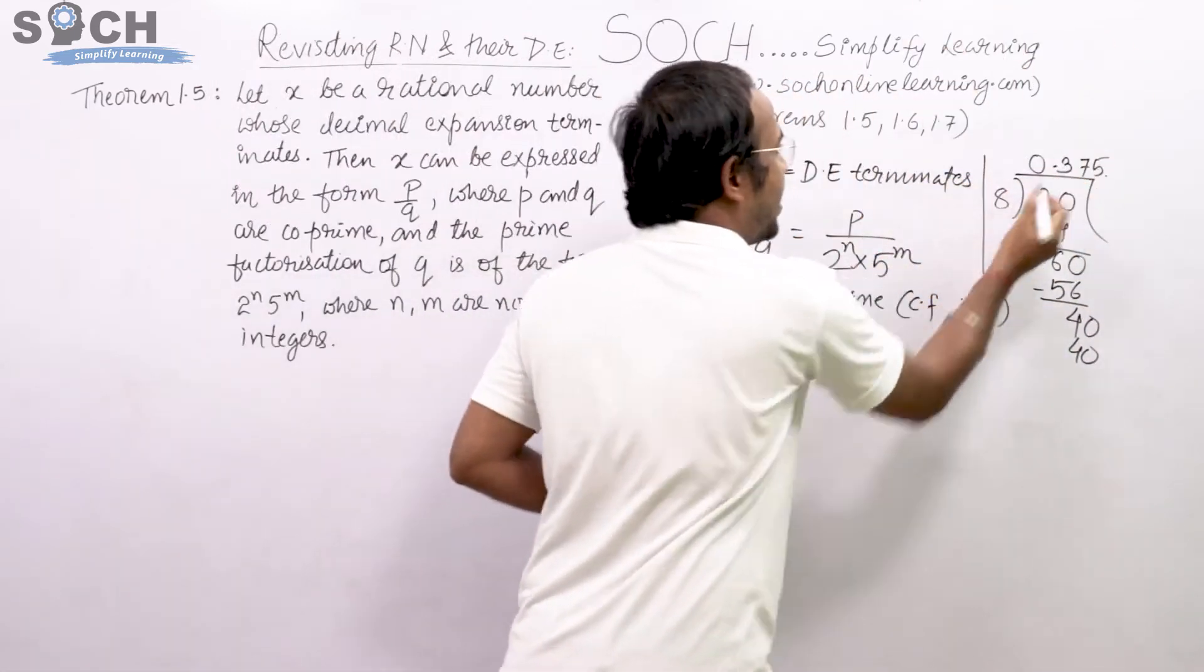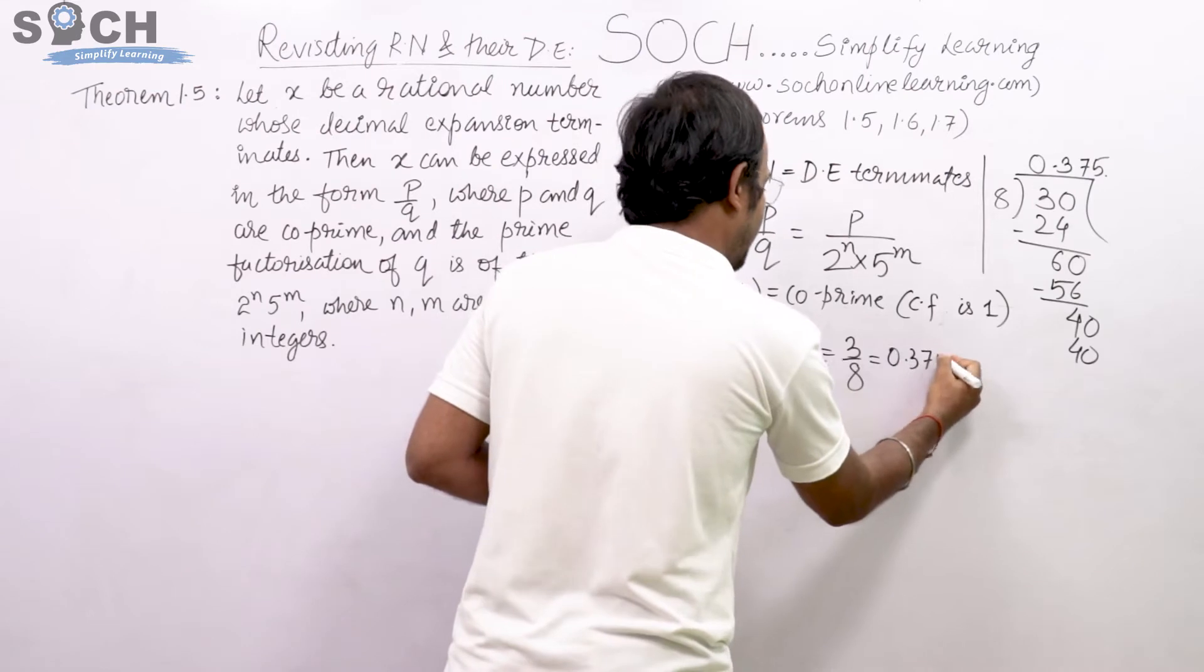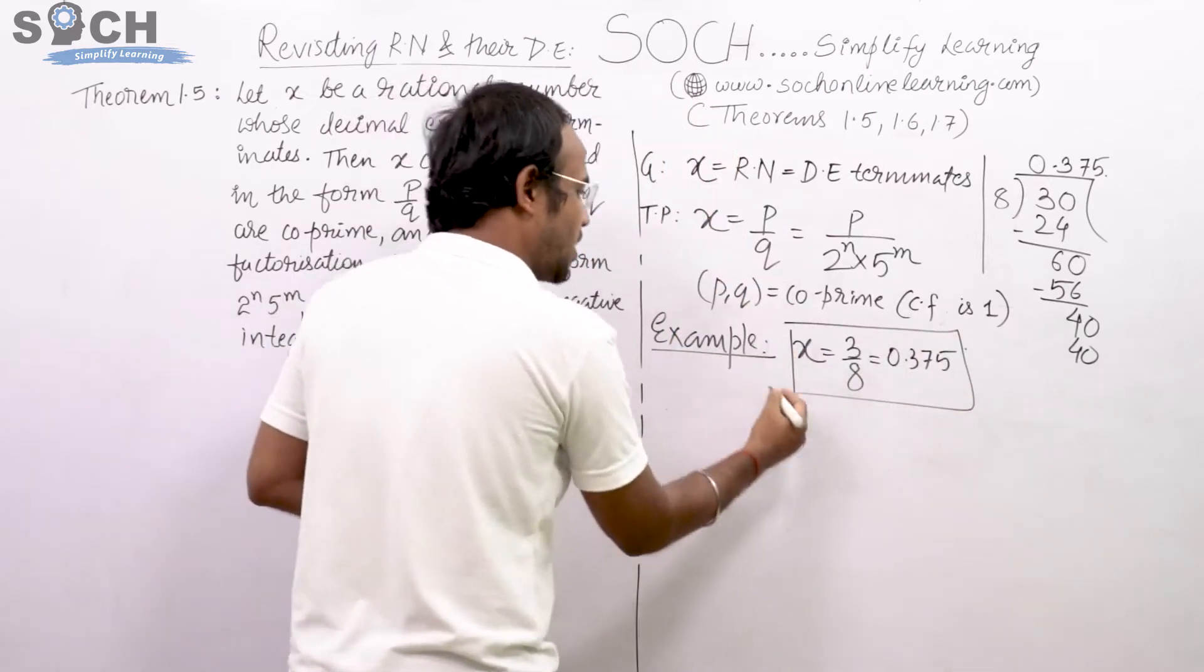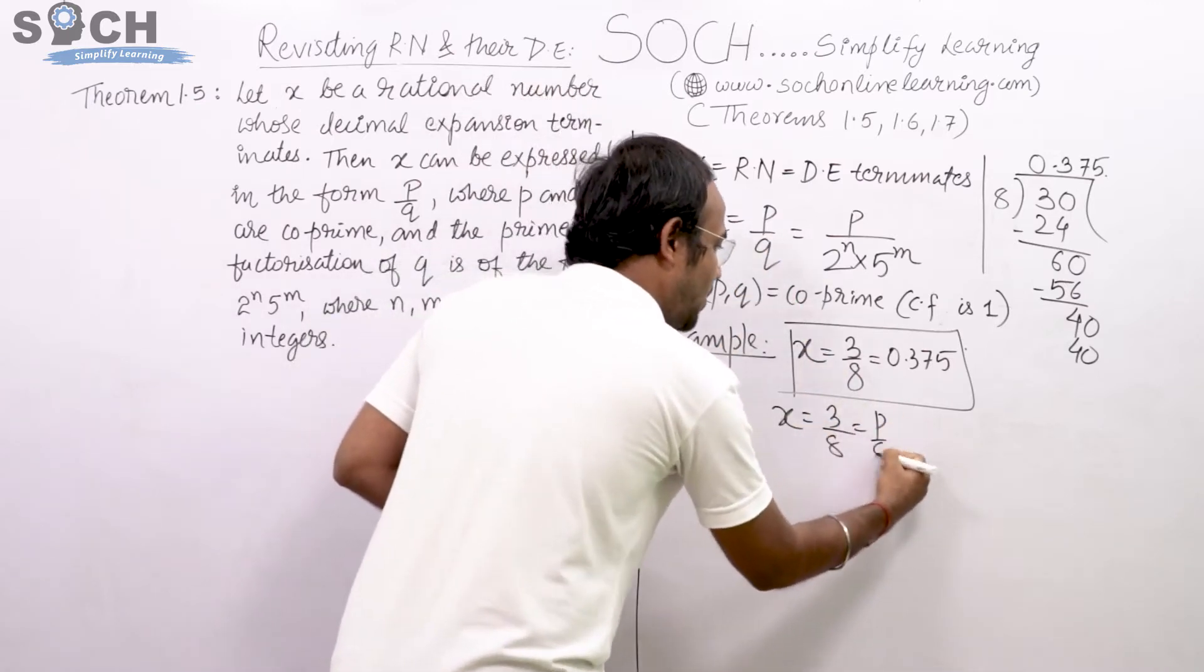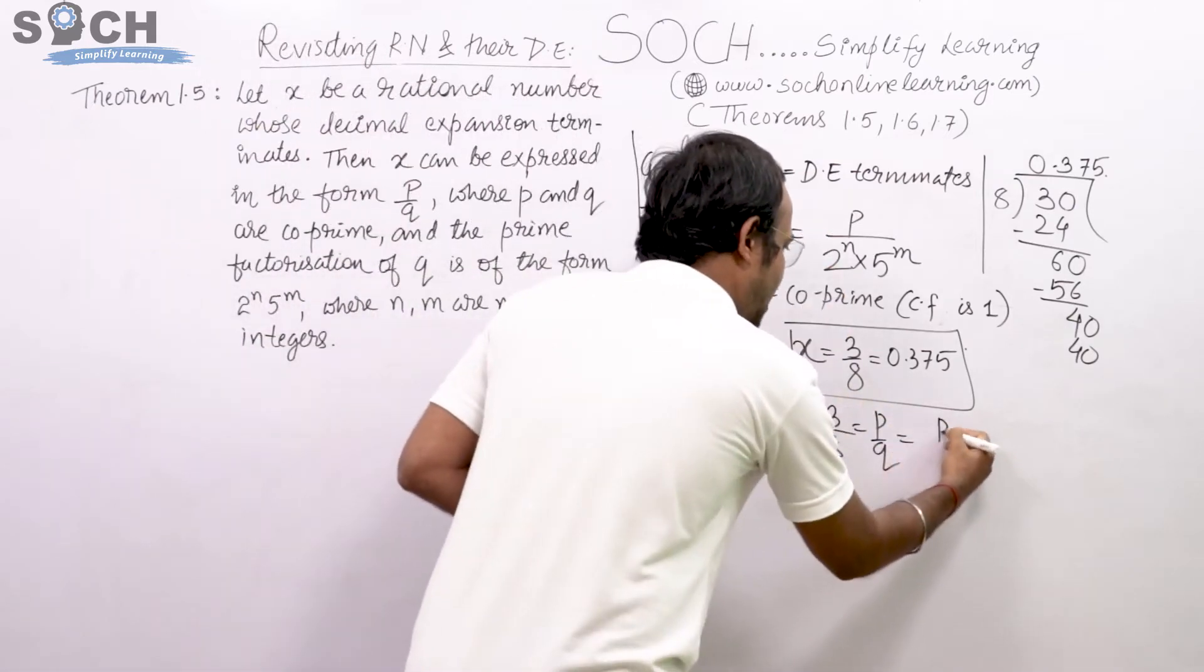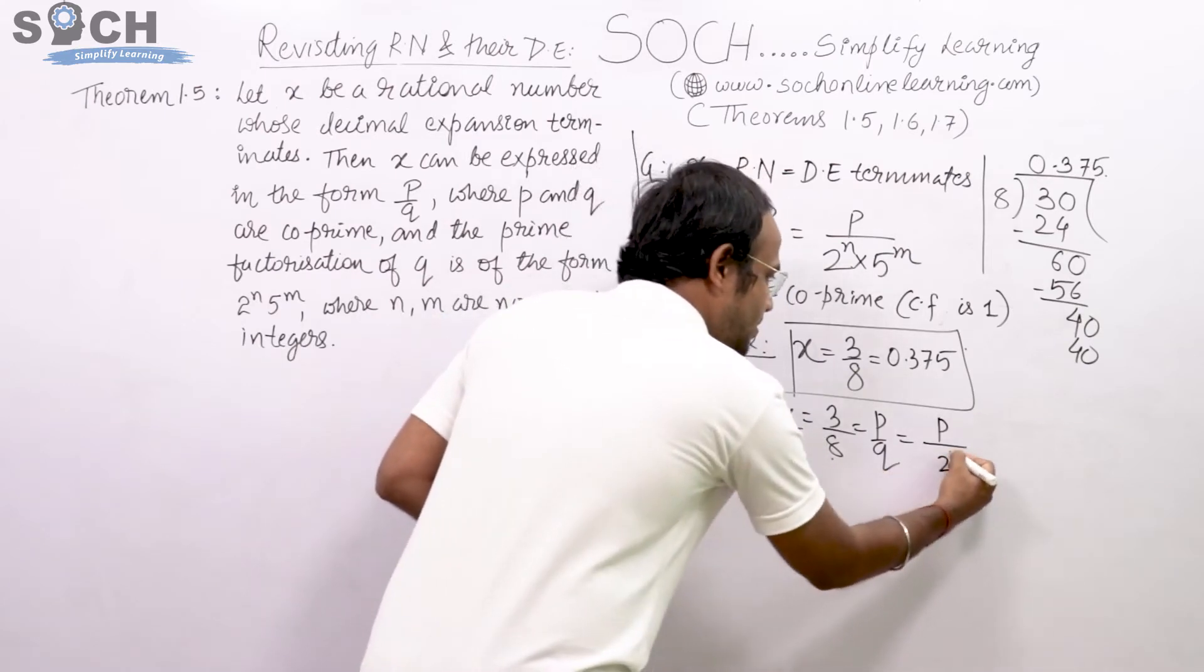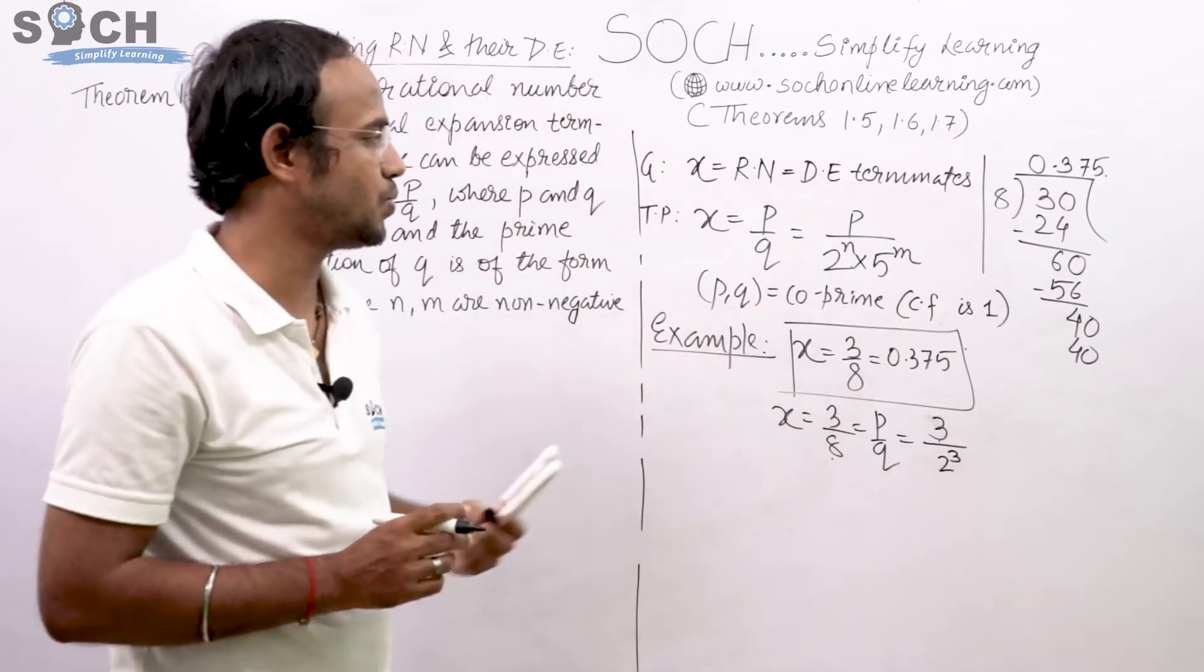It comes to an end. That means the decimal expansion ends, terminates. That means it comes out to be 0.375. Now this is what we understand, the given thing is a rational number. Therefore, 3 by 8 represents P by Q. Can't I express this 8 as 2 cubed?